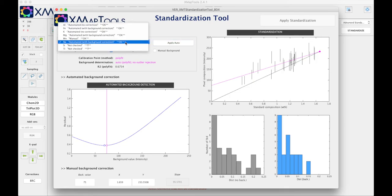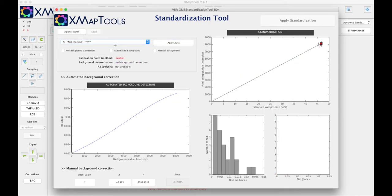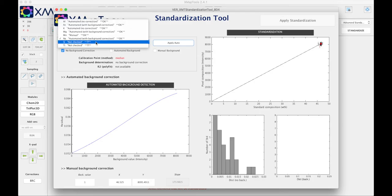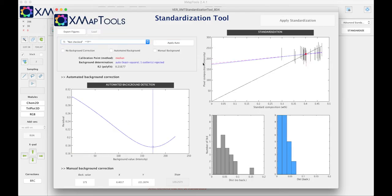I can just press apply auto and then silicon. Silicon we don't need any background correction because the count rates are really high for silicon in white mica. So I press apply auto.